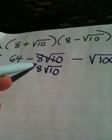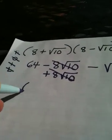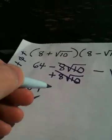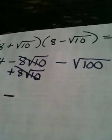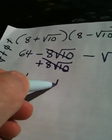This becomes 64 minus the square root of 100 is 10, and 64 minus 10 is 54.